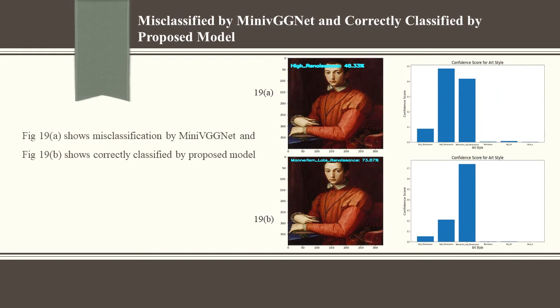Misclassified by MiniVGNet and correctly classified by proposed model: Some images are misclassified by MiniVGNet but are correctly classified by our proposed model. Figure 19a shows the misclassification by MiniVGNet and Figure 19b shows the correct classification by the proposed model.